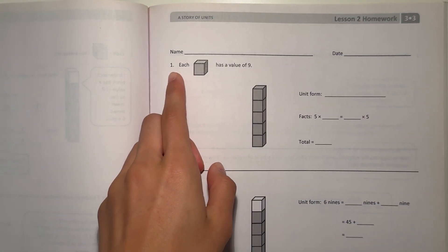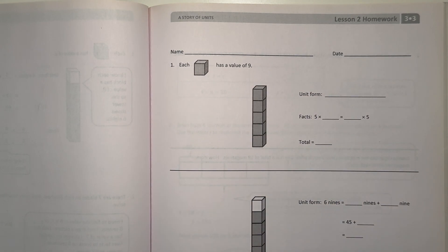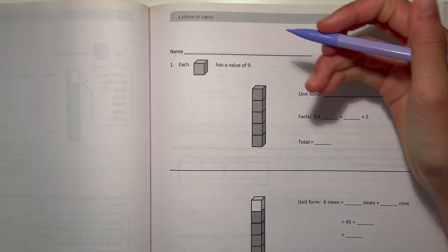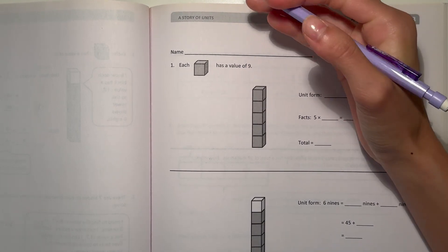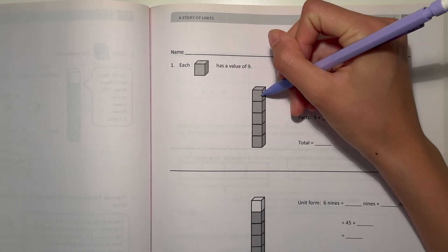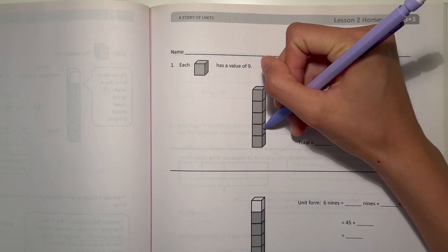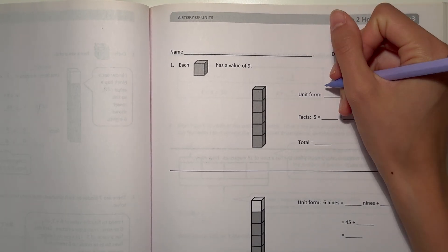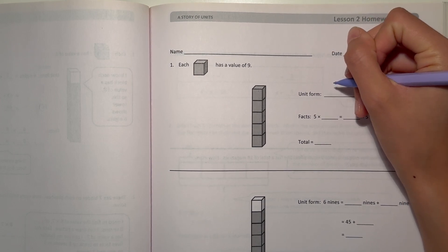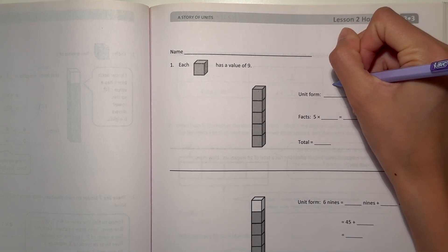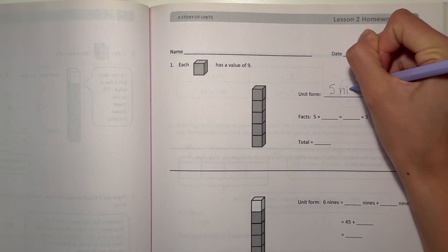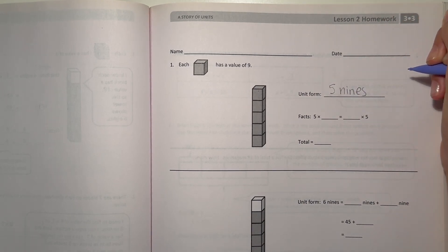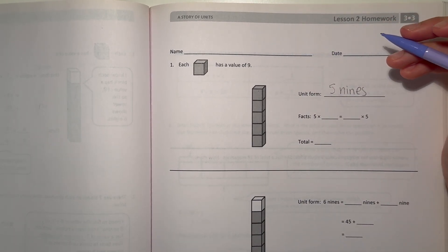Number 1, each cube has a value of 9. Alright, so first we have unit form. So we know each cube has a value of 9, and here we have 1, 2, 3, 4, 5 cubes. So unit form, we would have 5 nines, because each cube is worth 9, and we have 5 of them, so we have 5 nines.